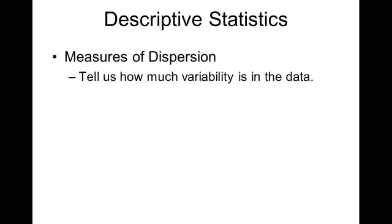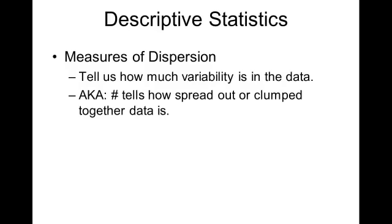So essentially, measures of dispersion are numbers that help us know how much variability is in the data, how close together the data is or how spread out the data is.